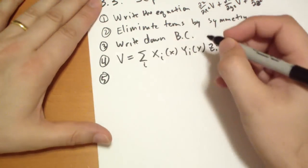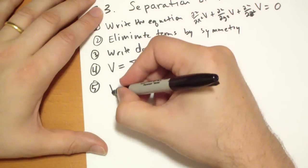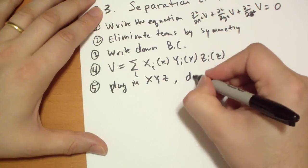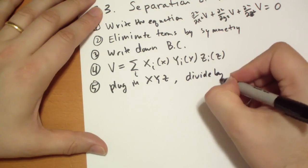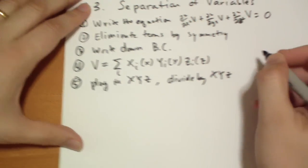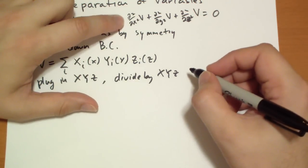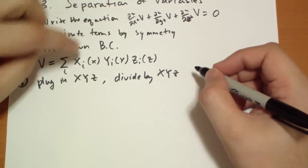So step five is we plug it in and then divide by it. How does that look? Well, the second derivative with respect to x of X(x), Y(y), Z(z). Since x is the only term that varies with x, the Y and Z terms come out.